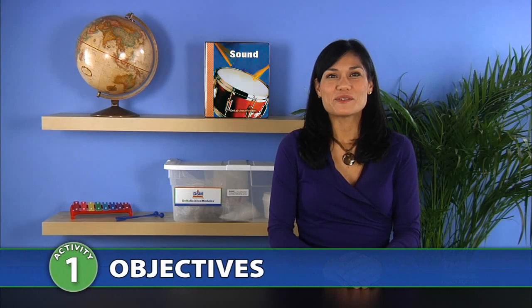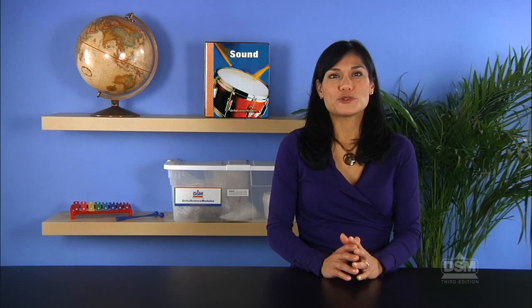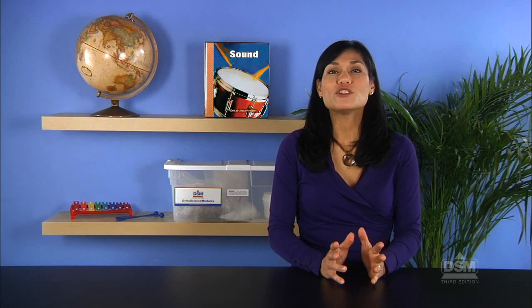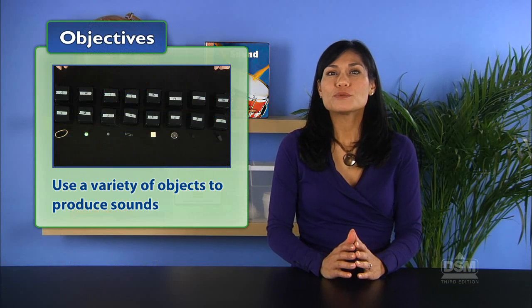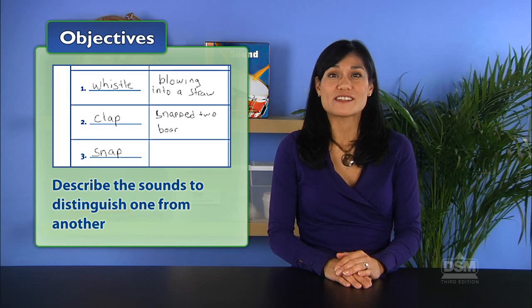In Activity 1, How Do Sounds Vary, students first try to create total silence. They then use a variety of objects to produce sounds, then think of words to describe the sounds.